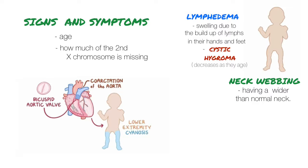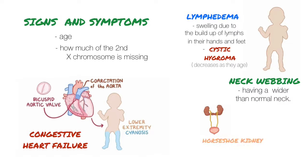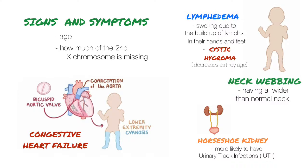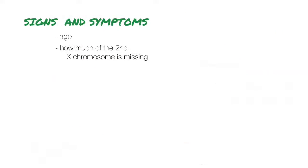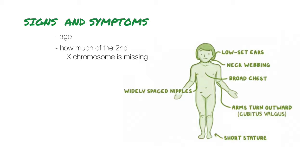Coarctation of the aorta and bicuspid aortic valve can cause lower extremity cyanosis — a bluish or purplish discoloration of the lower limbs — and can result in congestive heart failure. Children with horseshoe kidney are more likely to have urinary tract infections. Skeletal abnormalities become apparent, including short stature, a broad chest with widely spaced nipples, and low-set ears.